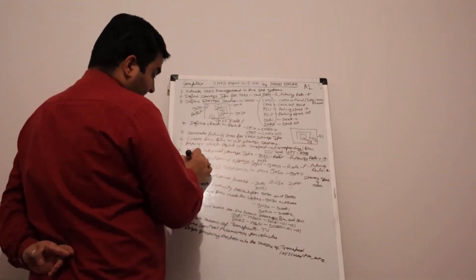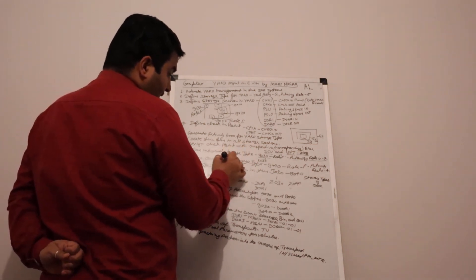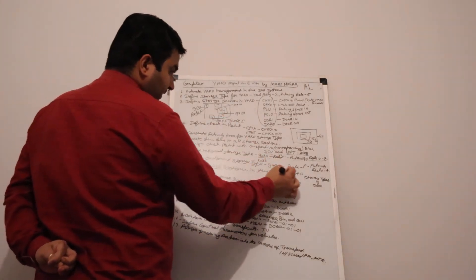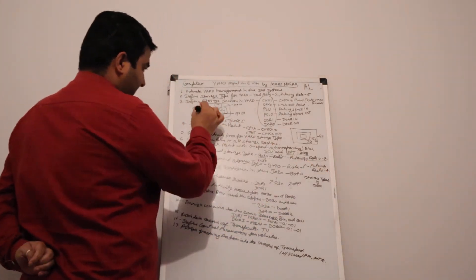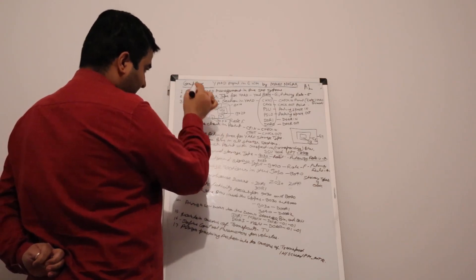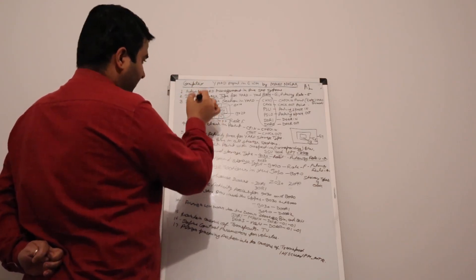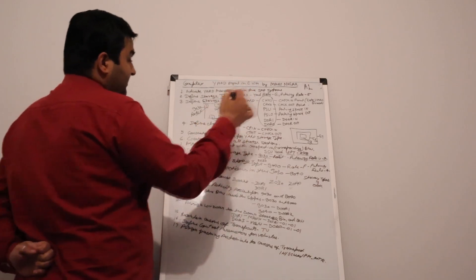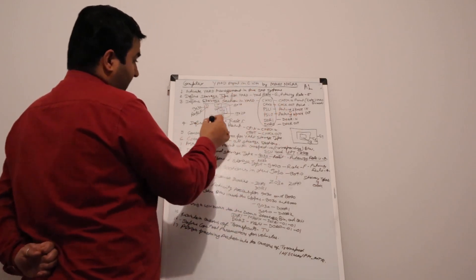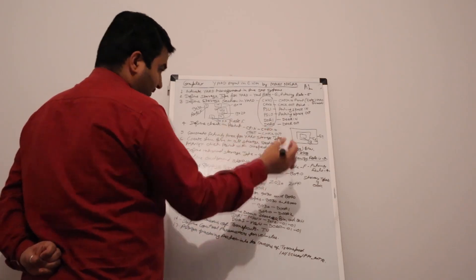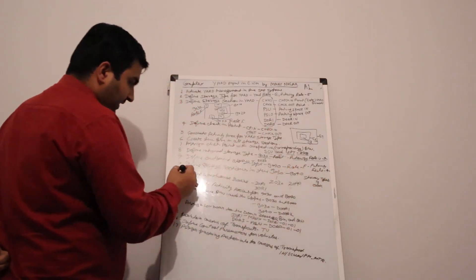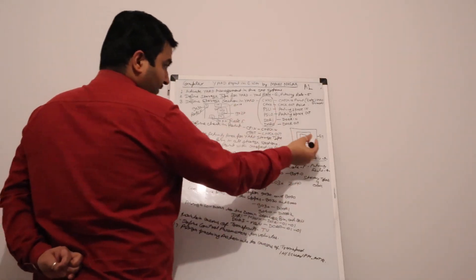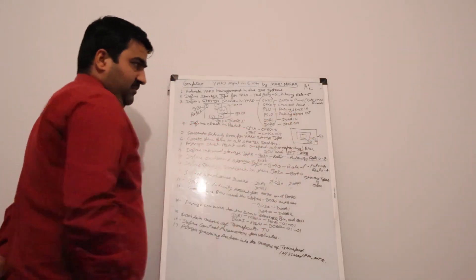The 9th point is to define the outbound storage type 9040, also with role F and put-away role. 9030 is the standard entrance gate number of the yard inbound side, and the outside gate number at the yard boundary is the standard 9040, also role F.